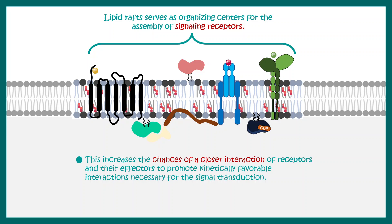Lipid rafts serve as organizing centers for the assembly of several signaling receptors. From a cell signaling point of view, lipid rafts are really important. Lipid rafts cluster several cell signaling receptors and signaling molecules, which enhances the chance of these effectors to come closer and transduce signals inside the cell.